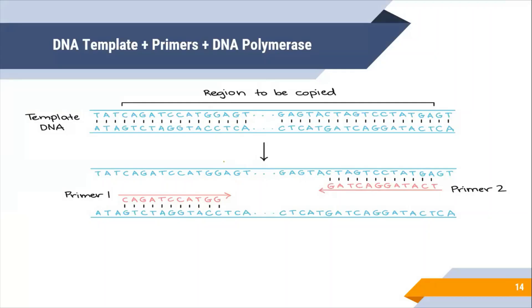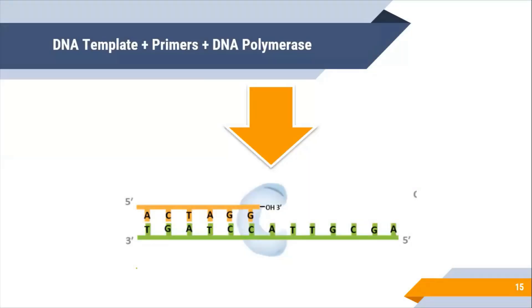Along with DNA template and primers we also need polymerase enzyme. DNA polymerase enzyme attaches and helps in polymerization in 5' to 3' direction. Now we have template DNA, primer, and DNA polymerase.